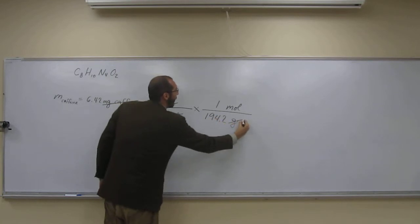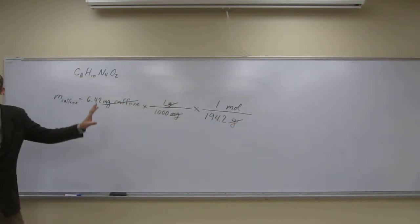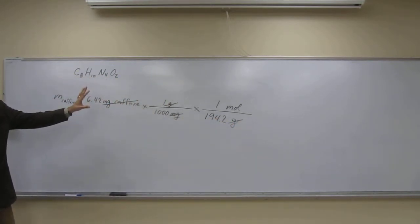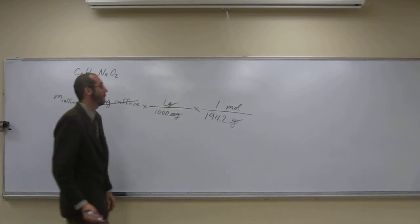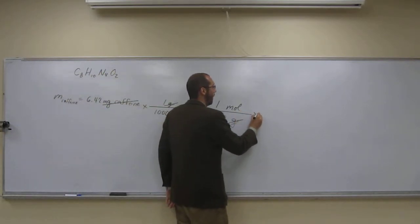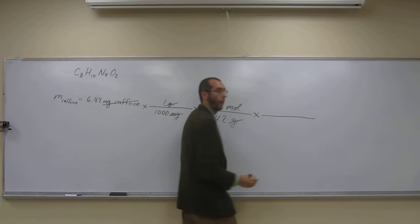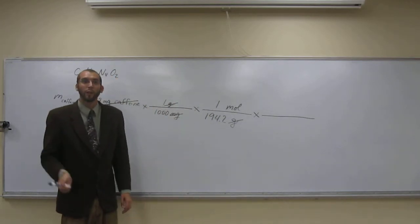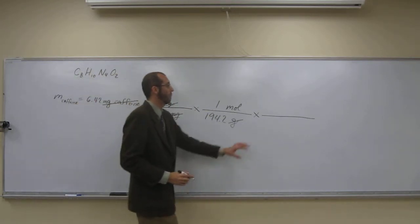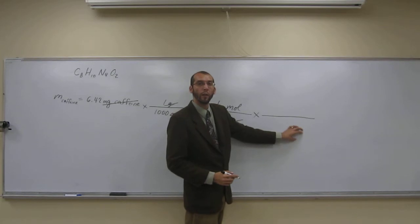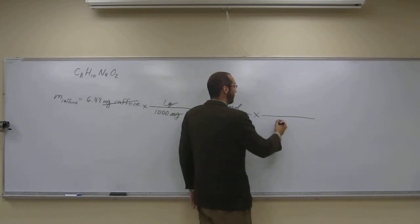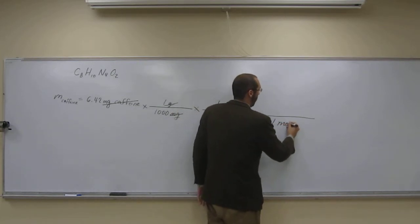So are we in atoms yet? No. What units are we in? Moles. So how do we go from moles to atoms? We multiply by Avogadro's number. So that means what's at the bottom here? Moles, how many? One. Very good.